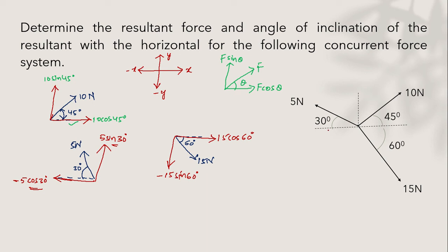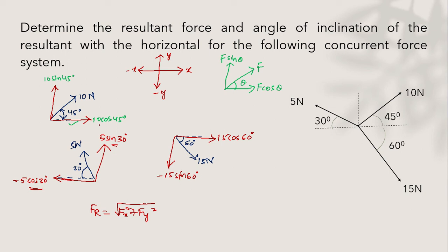Now for this entire system, we need to calculate the resultant. The resultant formula is: FR = √(FX² + FY²). First we need to calculate FX and FY. FX is the summation of all forces in the x direction (horizontal), and FY is the summation of all forces in the y direction (vertical). The x direction forces are: 10 cos 45°, minus 5 cos 30°, and plus 15 cos 60°.